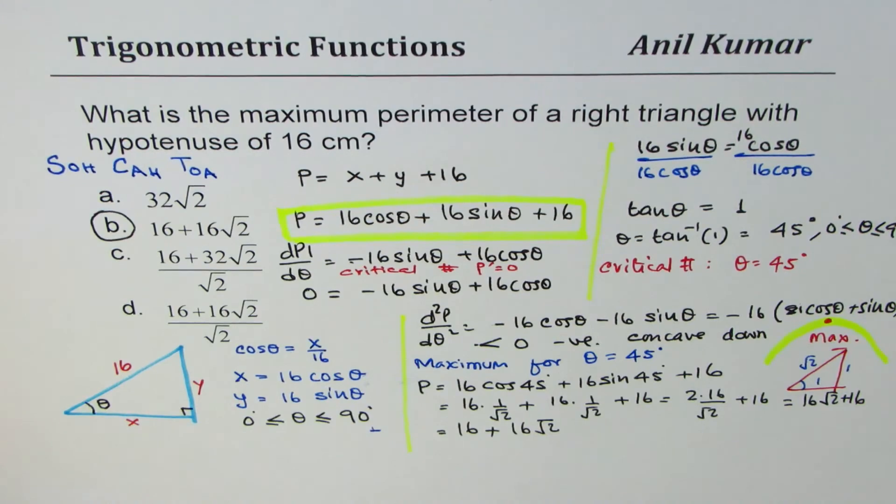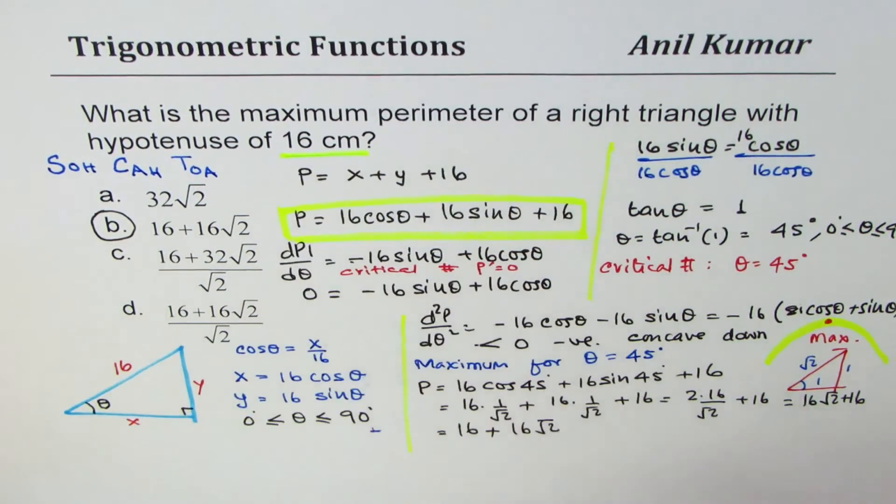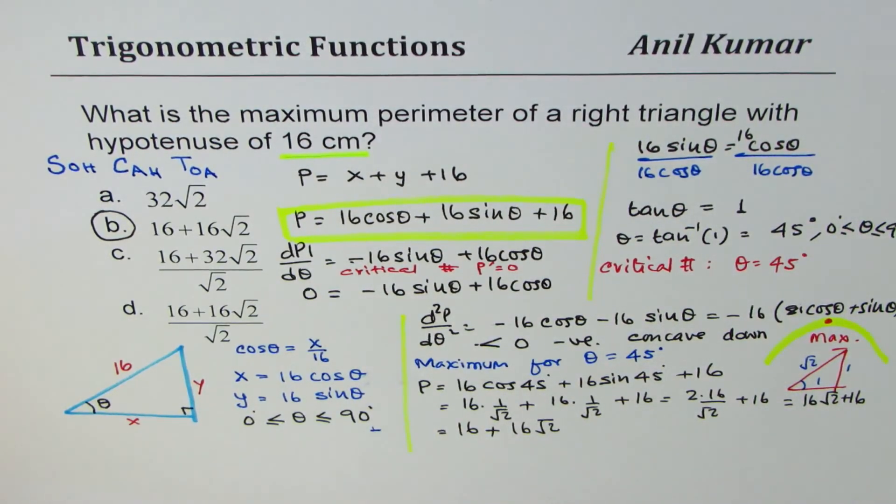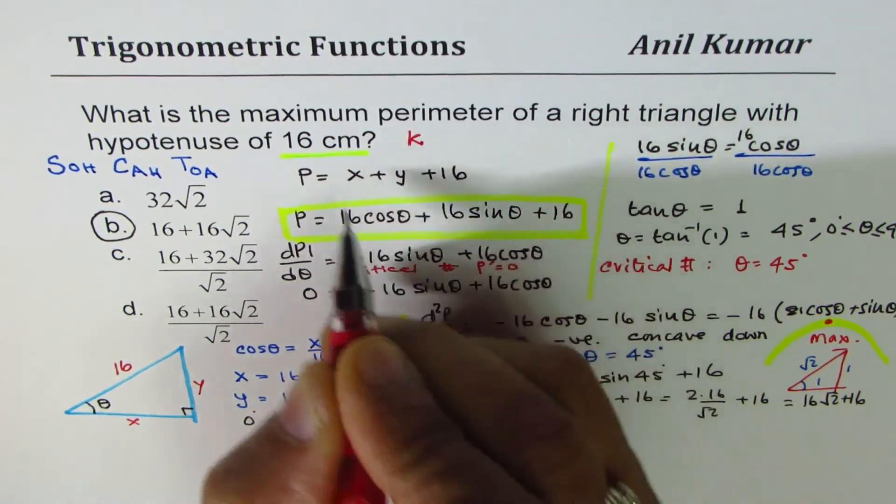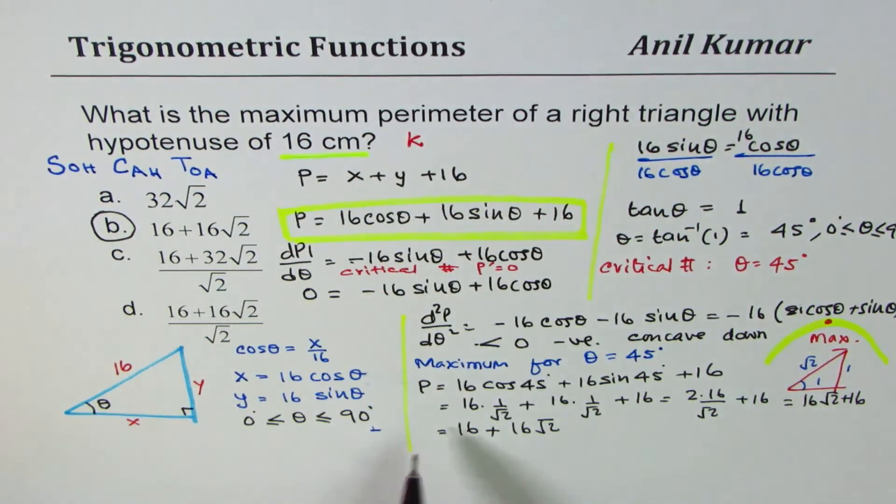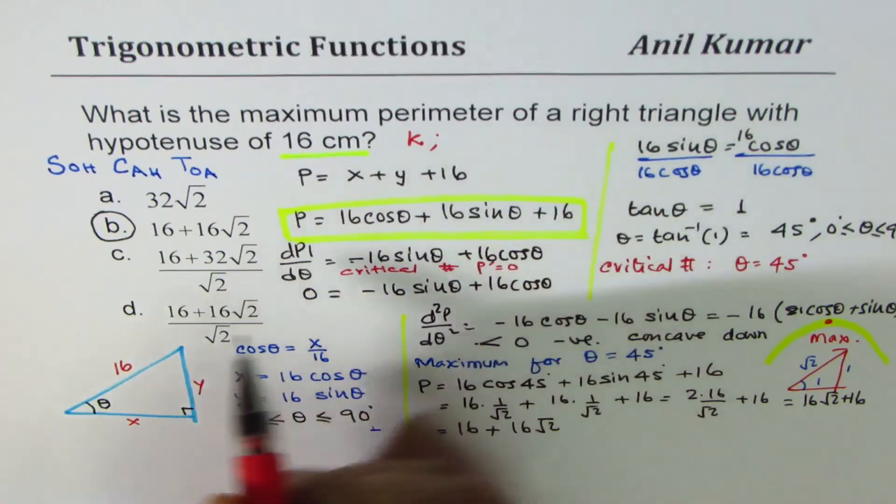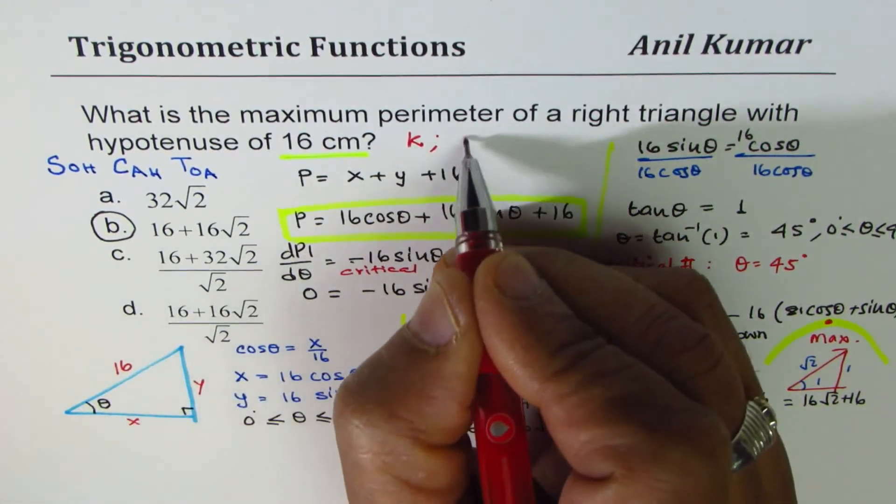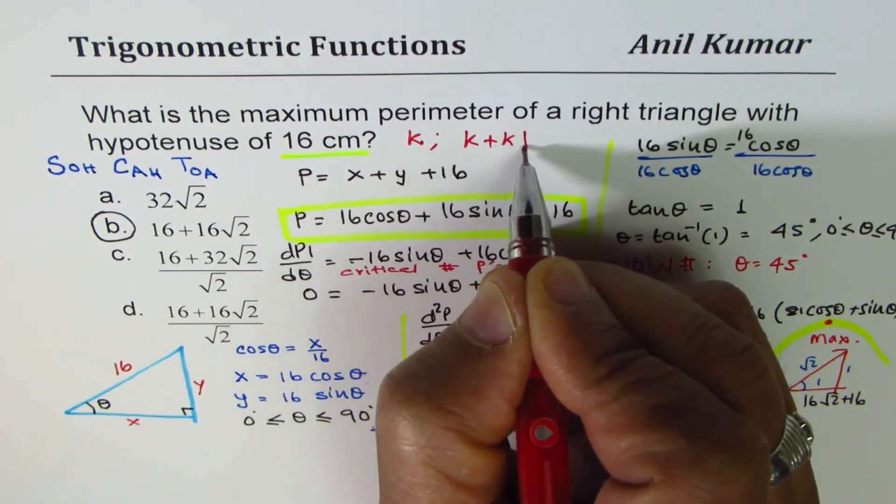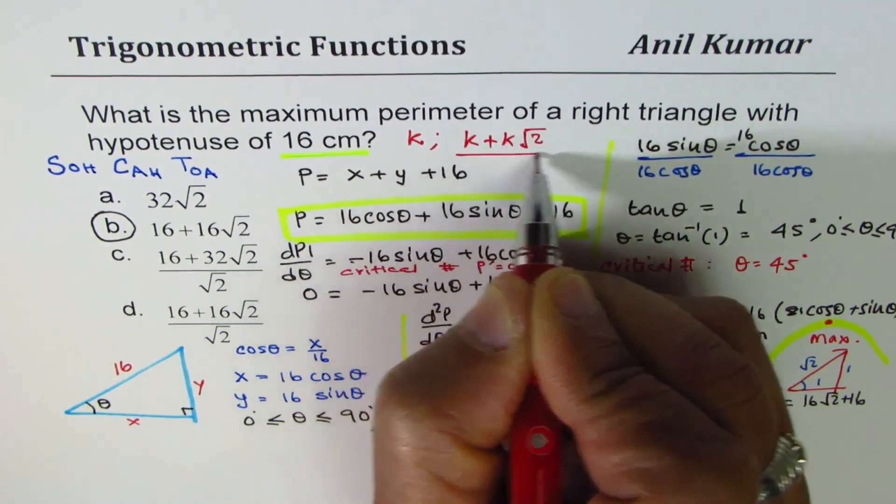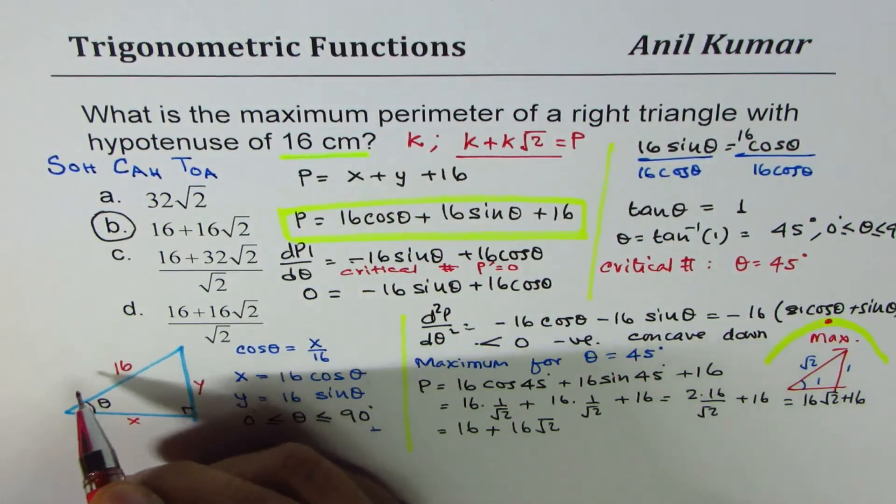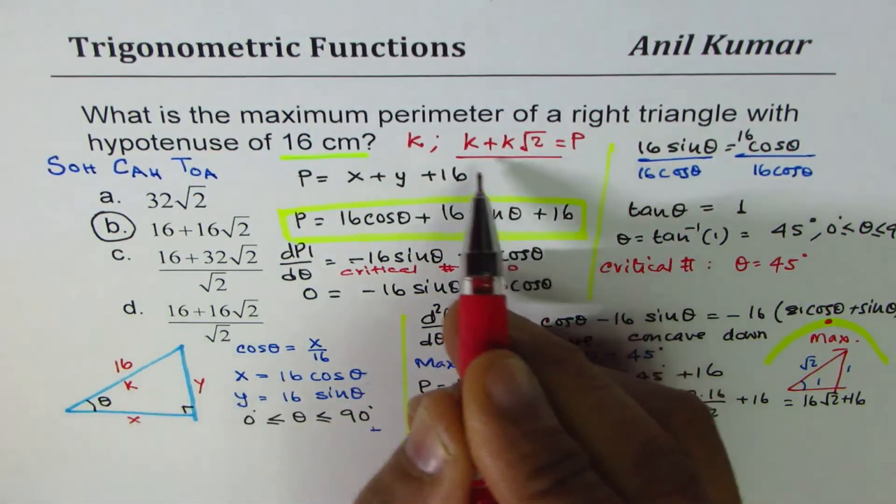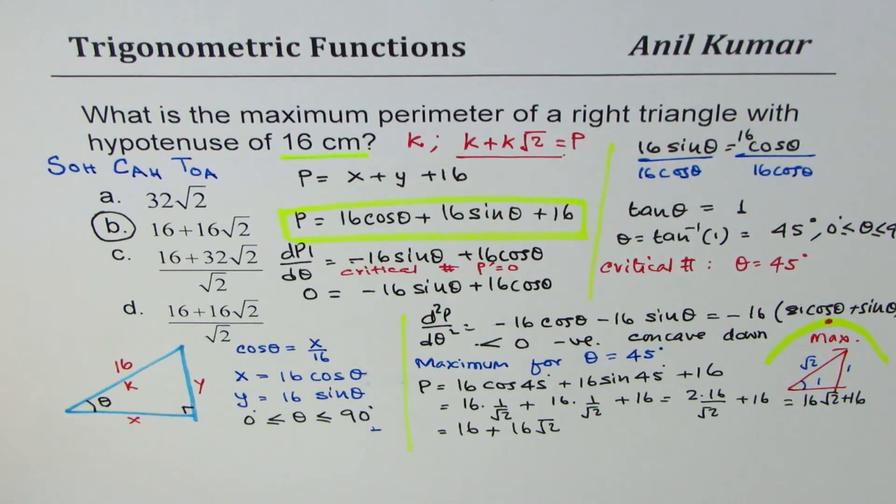In general, you will realize that if I replace this 16 by a constant k, the maximum perimeter will be k plus k square root 2. That becomes the maximum perimeter for hypotenuse to be k. That should help you many times to answer such a question in competitive examinations.